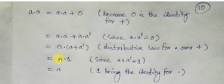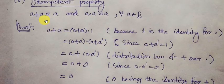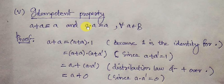Since 1 is the multiplicative identity element, A into 1 equals A. So what we have proved is: A into A equals A. Both relations — A plus A equals A, and A into A equals A — have been proved. These two relations are called the idempotent property.